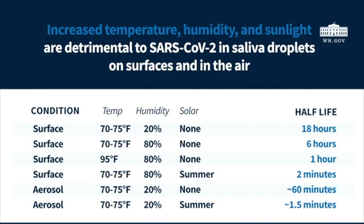If you look at an 18-hour half-life, what you're basically saying is that every 18 hours, the life of the virus is cut in half. So if you start with 1,000 particles of the virus, in 18 hours you're down to 500. In 18 hours after that, you're down to 250, and so on and so forth. That's important as I explain the rest of the chart.